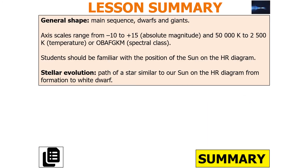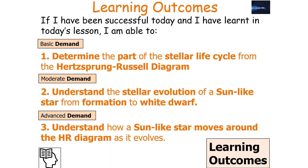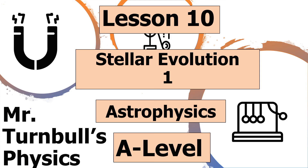We should be able to understand the main sequence, the dwarfs and the giants on the Hertzsprung-Russell diagram, understand the axis scale range for absolute magnitude and temperature/spectral class, and understand the path of a star similar to our Sun on the HR diagram from formation to white dwarf. I hope you've enjoyed today's lesson on stellar evolution, part of the astrophysics topic in AQA A Level Physics. Thank you very much for watching and have a lovely day.